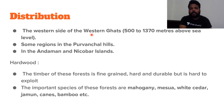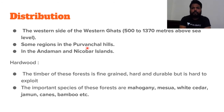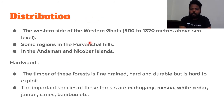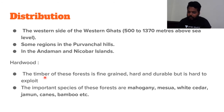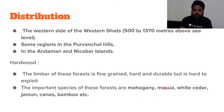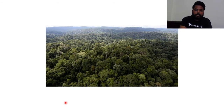On the western side of the Western Ghats, from where the monsoon enters, we get maximum precipitation — this is one key region. In the northeastern states — Meghalaya, Nagaland, Mizoram, Manipur — we find huge precipitation. Also in Andaman and Nicobar Islands. The hardwood in this region is fine-grained, hard and durable, but hard to exploit commercially because of multiple species growth. Important species include mahogany, mesua, white cedar, jamun, canes, and bamboo.